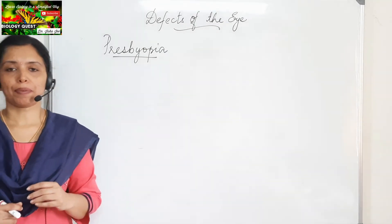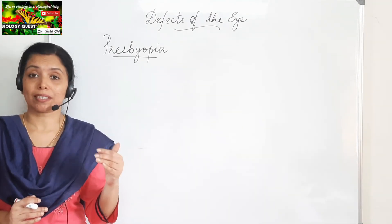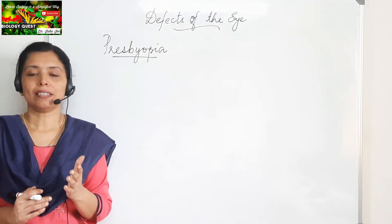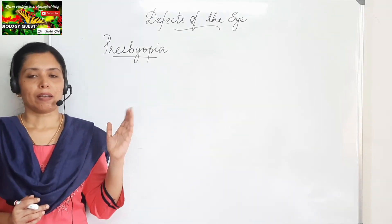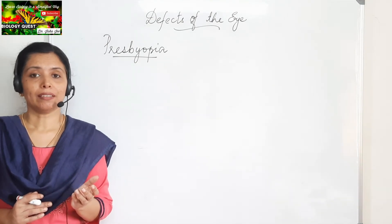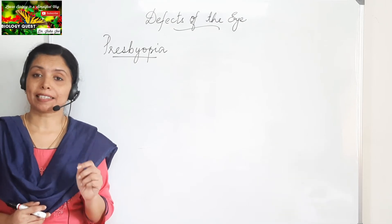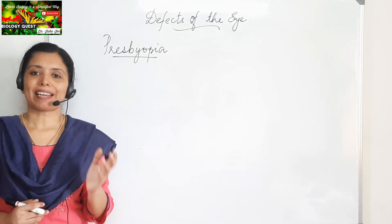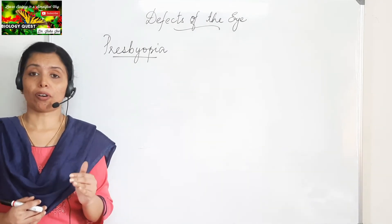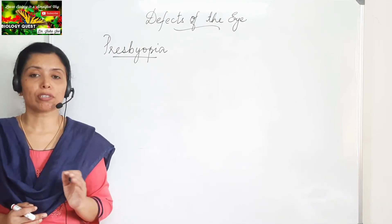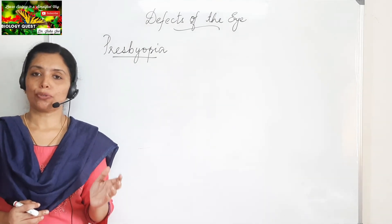The next condition is presbyopia. Presbyopia is farsightedness in old-aged people — such a person can see distant objects clearly, but nearby vision is affected. Farsightedness occurring in old-aged persons is called presbyopia. How is it corrected? By using a convex lens. The cause of this defect is the loss of flexibility of the lens as the person grows old.